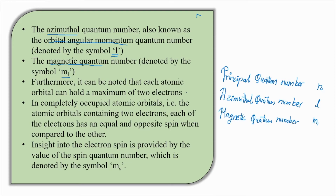Furthermore, it can be noted that each atomic orbital can hold a maximum of two electrons — not more than two electrons. In completely occupied orbitals, that is the atomic orbitals containing two electrons, each of the electrons has an equal and opposite spin.